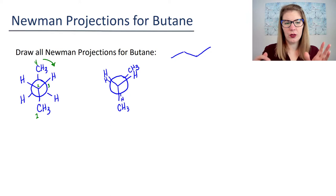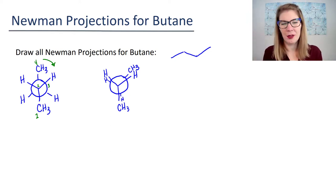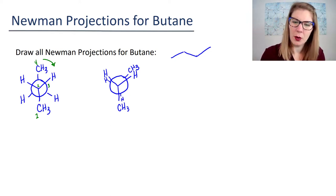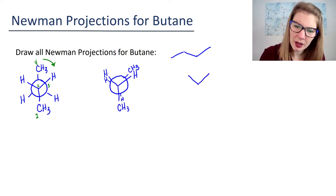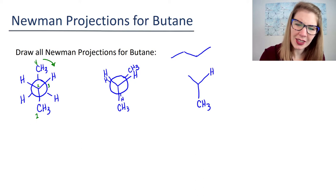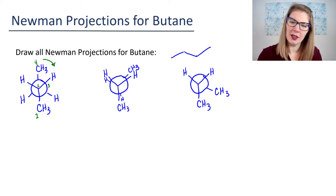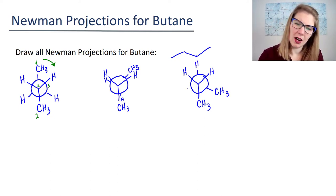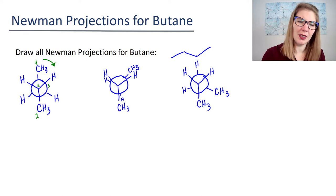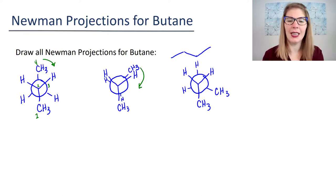So we drew one rotation—now we're going to rotate again. We keep that front carbon looking the same, just so that we don't confuse ourselves. And now the CH3 on the back carbon will be here.